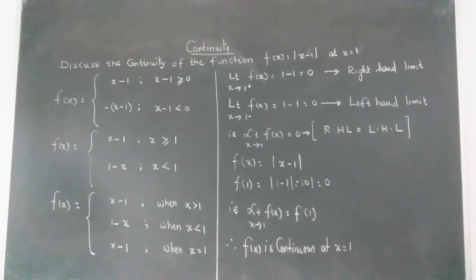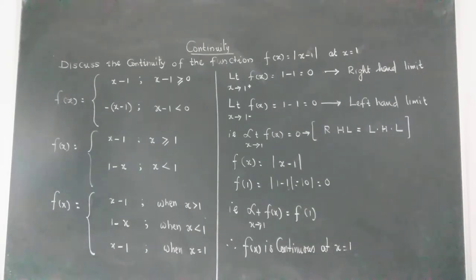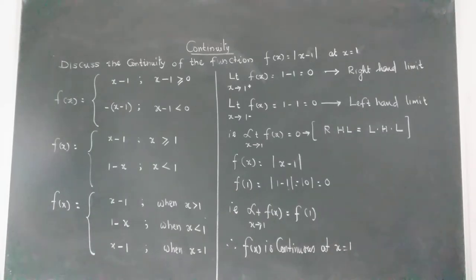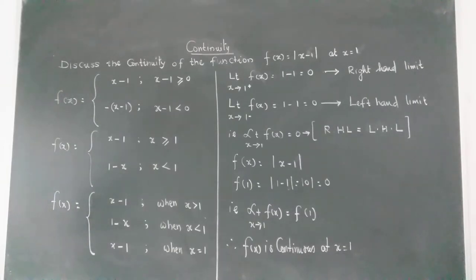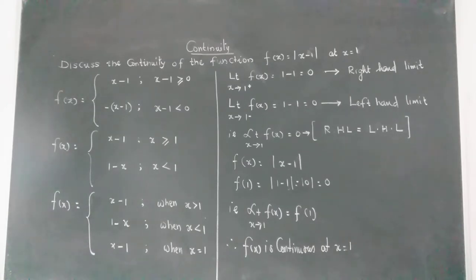But in the maths language when we speak about continuity, we have learnt that the left hand limit should be equal to the right hand limit, and the value of the function should be equal to the limit of the function. Three items are needed: left hand limit, right hand limit, and the value of the function. When all these three are equal, we state that the given function is continuous.